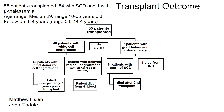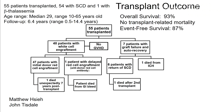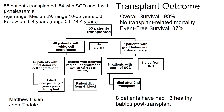47 patients had additional donor red cell engraftment. One patient became transfusion-dependent due to an antibody to the donor's red cells, requiring transfusions for about a year and a half. One patient died unexpectedly at 7 years post-transplant, one died from a GI bleed, 7 patients rejected the grafts, and 6 had a return of their sickle cell disease — one died after a second transplant and one died from intracranial hemorrhage at about 7 months post-transplant. The overall survival is 93%, with no transplant-related mortality, and the event-free survival is 87%. Importantly, unlike myeloablative regimens where most children are expected to be infertile, 8 of our patients have had 13 healthy babies post-transplant.